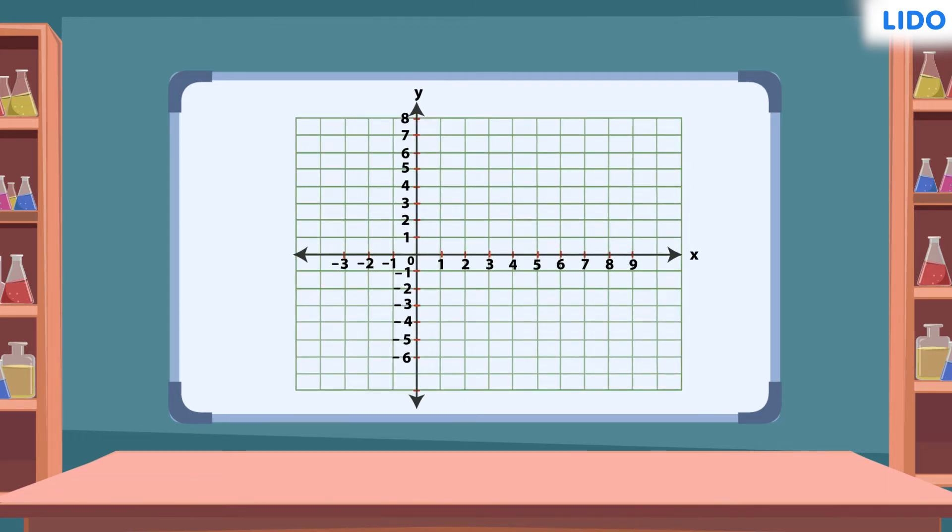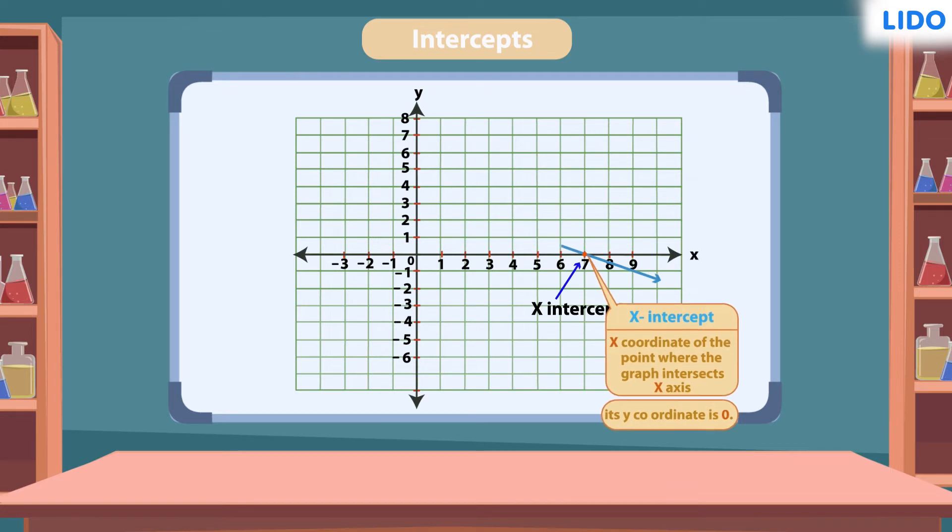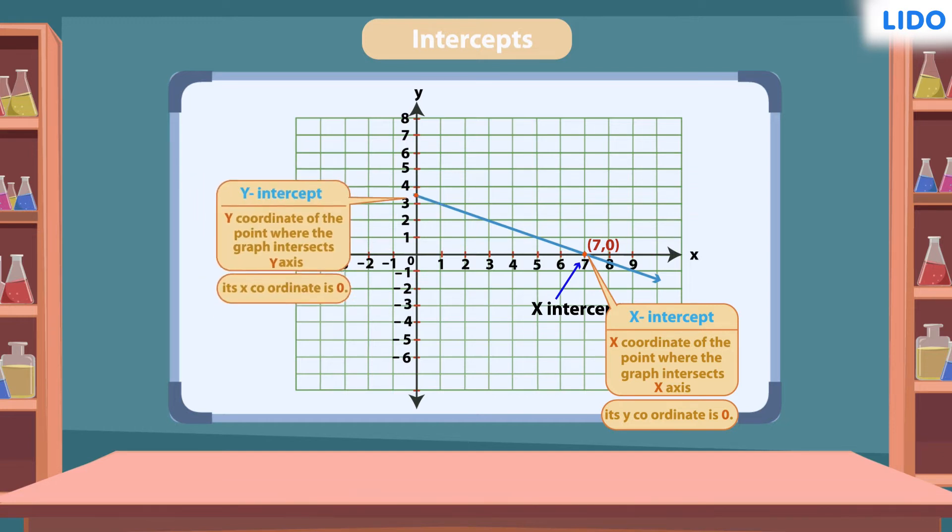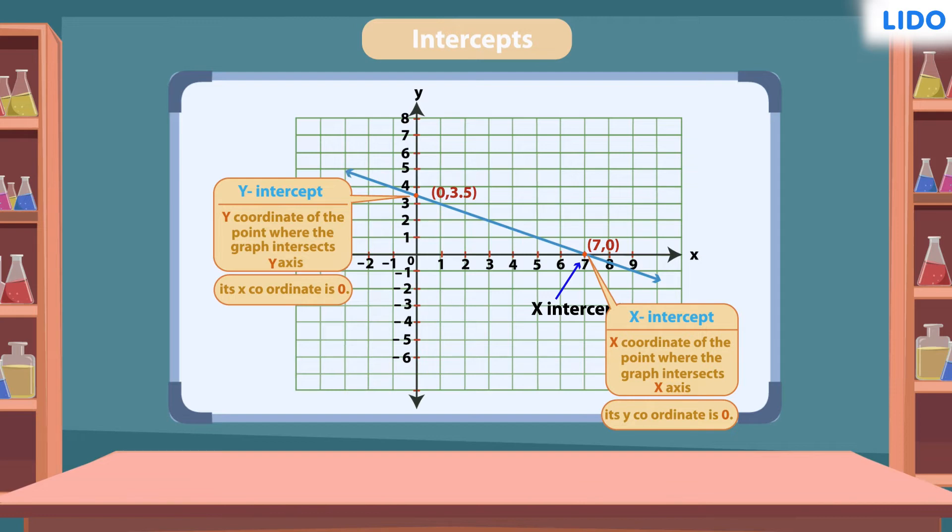The points where the line intersects the axis are called intercepts. The x-intercept is the point at which the graph crosses the x-axis. At this point, the y-coordinate is 0. The y-intercept is the point at which the graph crosses the y-axis. At this point, the x-coordinate is 0.